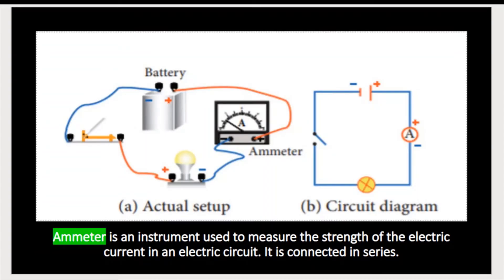How do we measure electric current, and which instrument is used? The instrument used to measure electric current is called an ammeter. It is used to measure the strength of electric current. The ammeter is connected in the circuit, and the same amount of current flows through it.